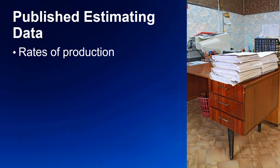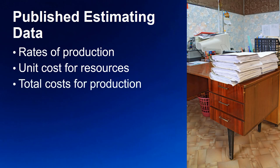Published estimating data is available from industry-based or government-created sources, and having rate information and unit cost together allows you to determine total cost of production for the resources selected. These external publications may be very helpful since someone else has done all the analysis for us.